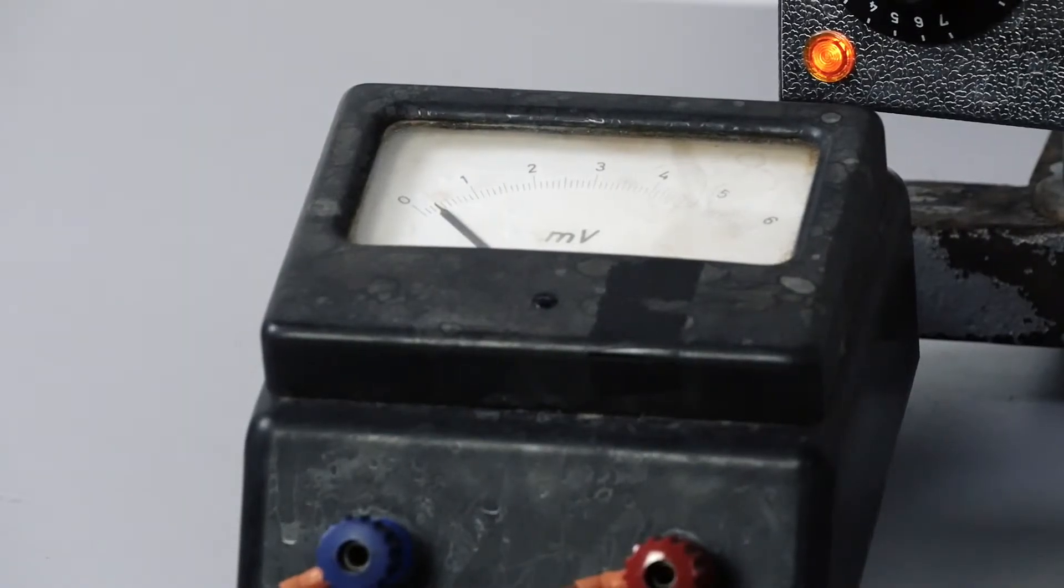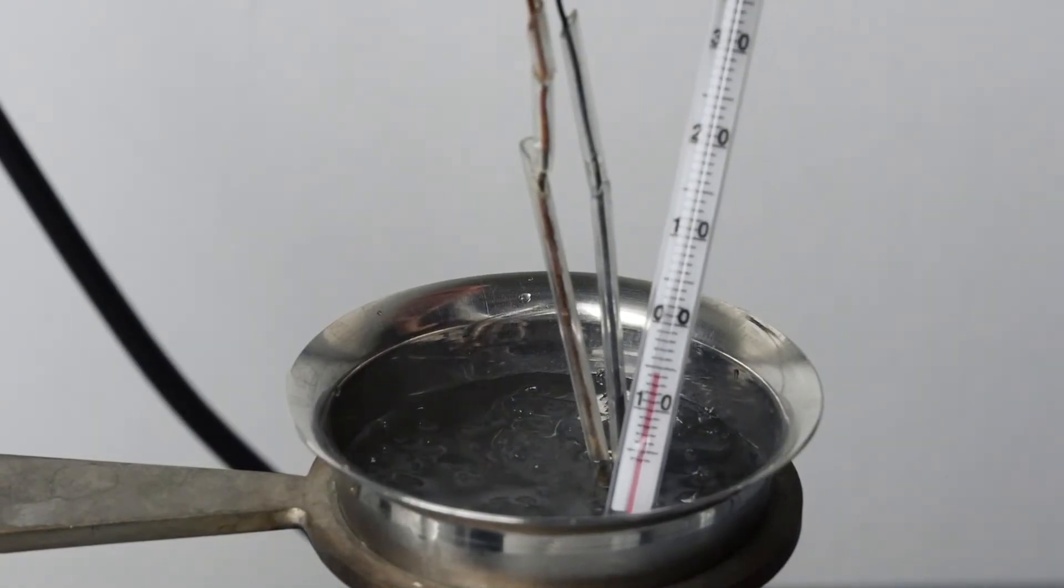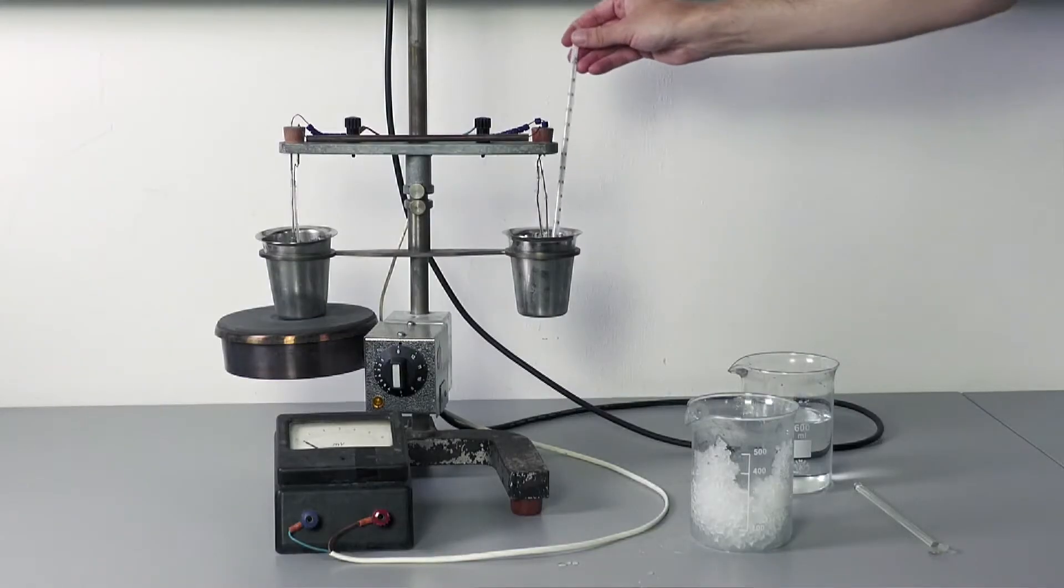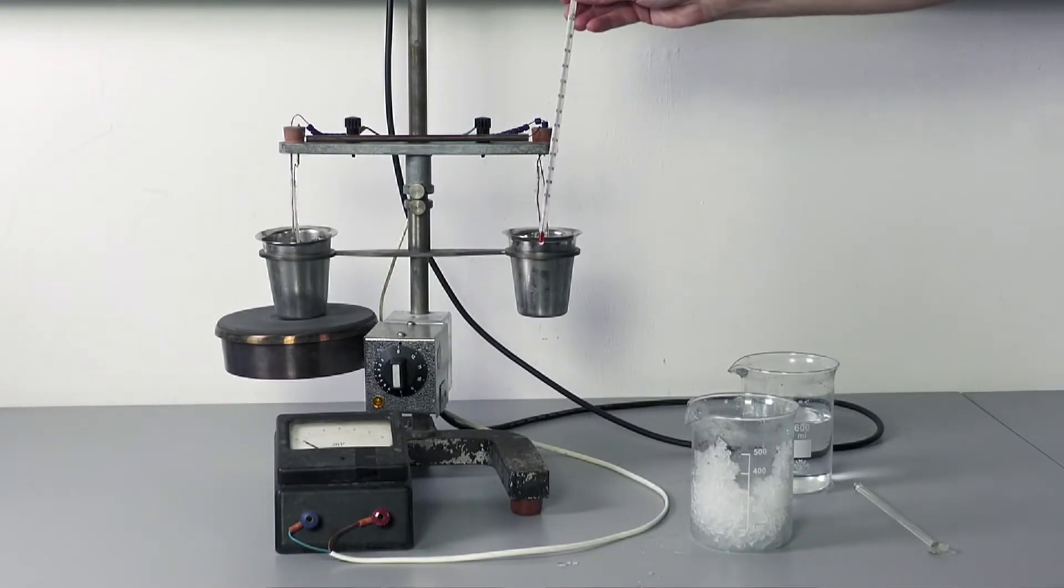One of the pairs is immersed in ice water at a constant temperature around zero degrees Celsius. The other pair is immersed in water on a hot plate with a variable temperature.